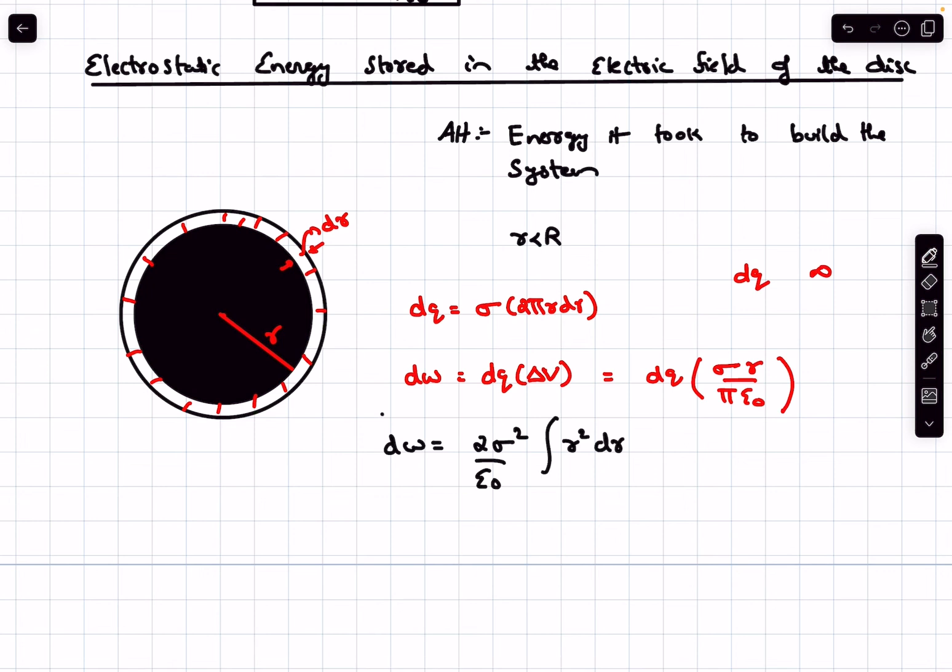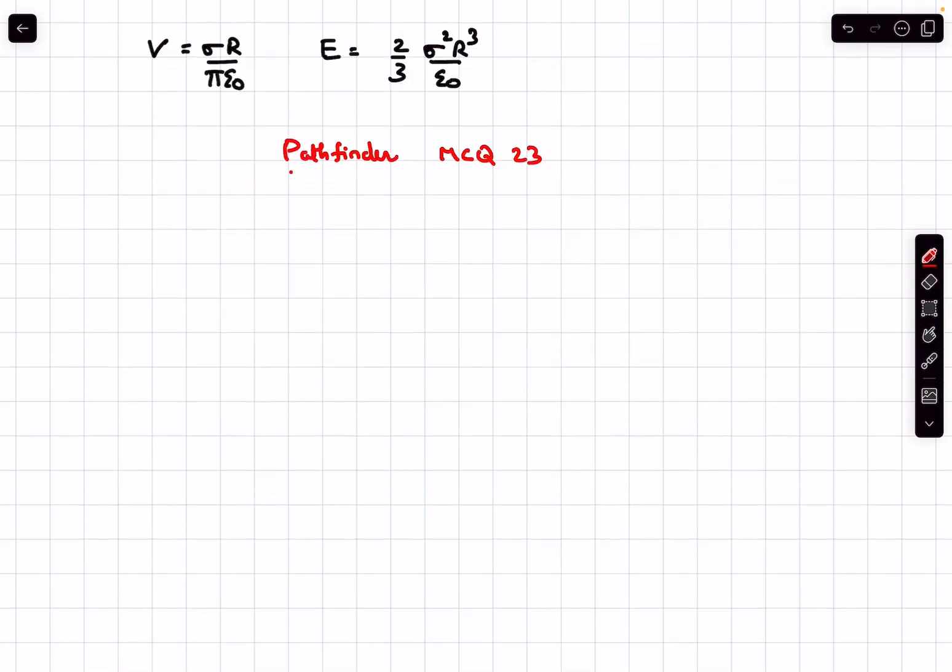After rearranging the terms we obtain the value of dW as this particular value. Now all we have to do is integrate this expression, and from here we'll get the total electrostatic energy of the disc. This would be equal to (2/3)σ²R³/ε₀.